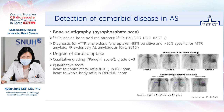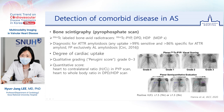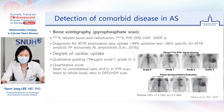The degree of cardiac uptake is usually graded semi-quantitatively using the Perugini score of grade 0 to grade 3. Grade 0 is no uptake. Grade 1 is mild uptake less than the rib. Grade 2 is uptake similar to the rib. Grade 3 is strong uptake more than the rib. Also, the uptake can be graded in a qualitative score in contrast to the rest of the bone.